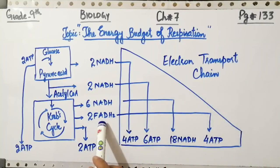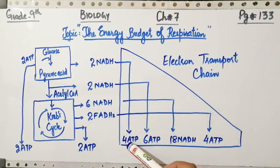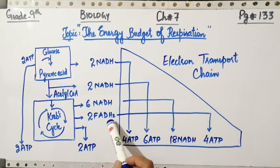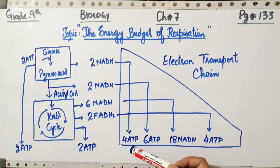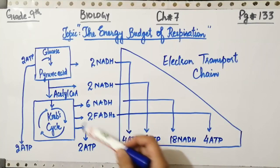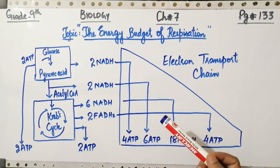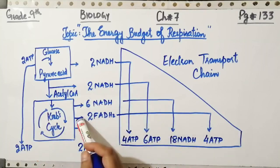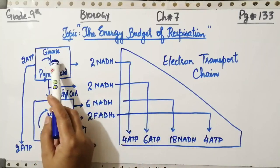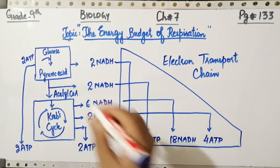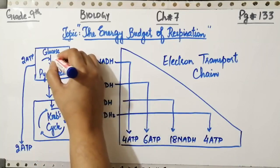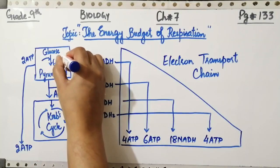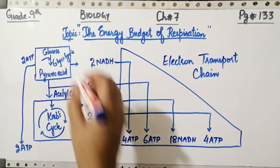Each FADH2 produces two ATP, so if two FADH2 are produced they will produce four ATP. In this manner, the total output of ATPs can be calculated from the data given in front of you. During the process of glycolysis, two ATP are produced directly.